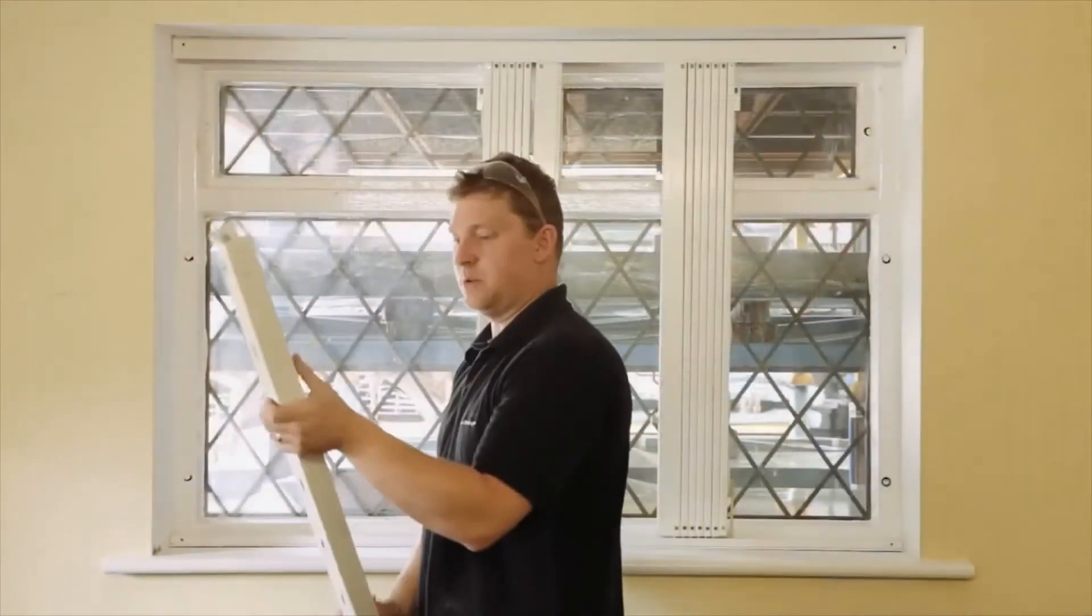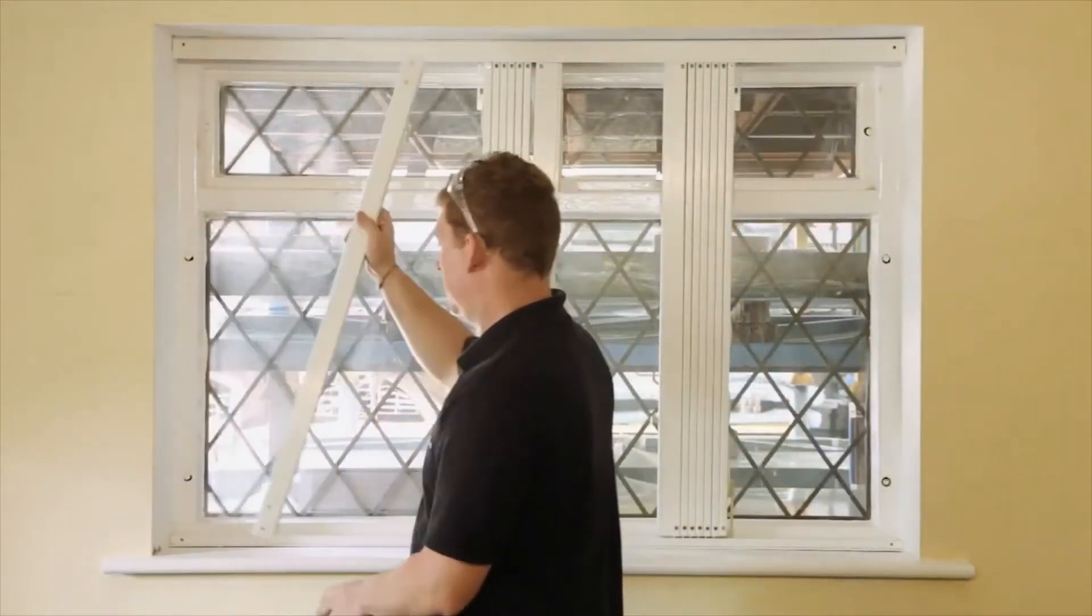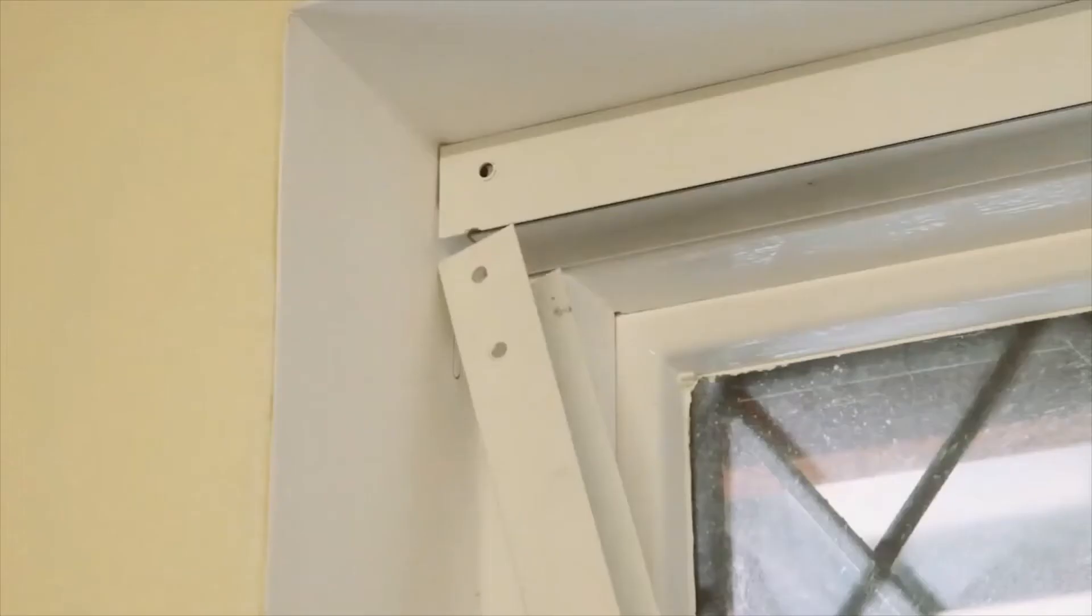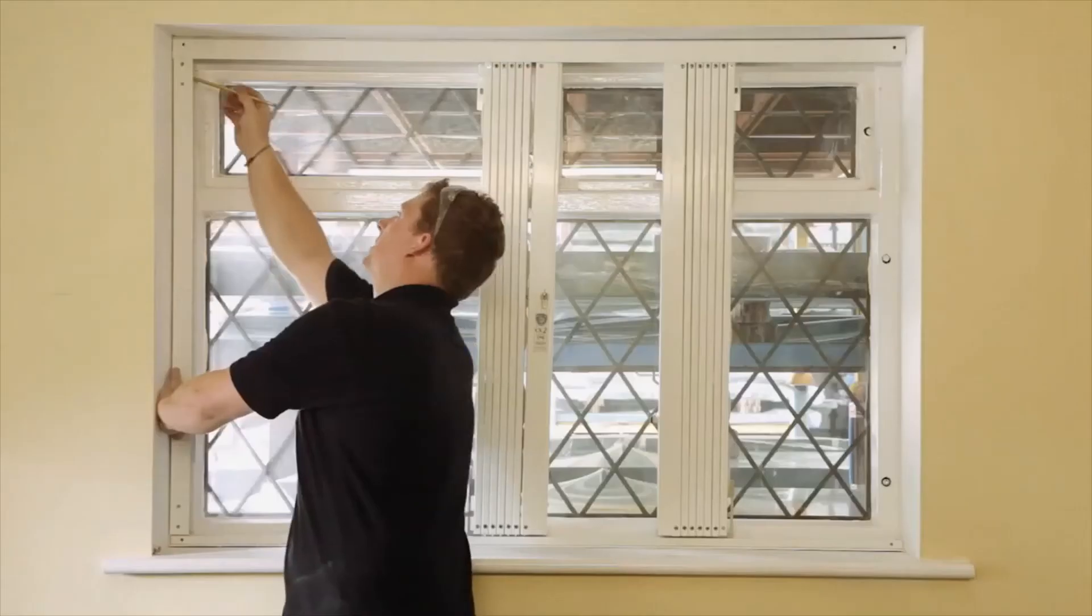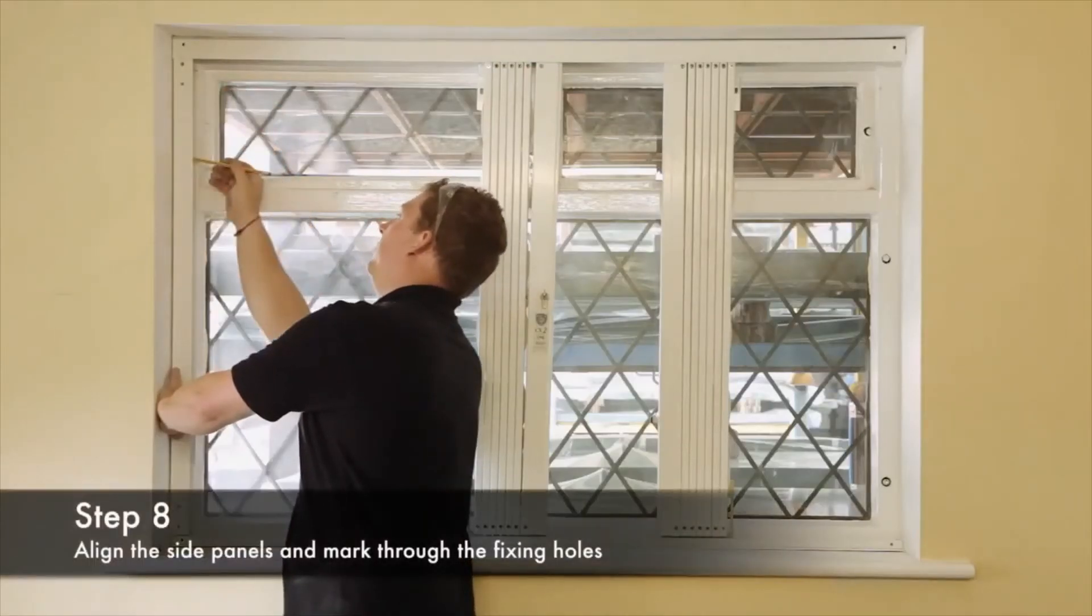Next you're going to take one of your side panels, hold it up just inside the top of the head rail, mark through your fixing holes.